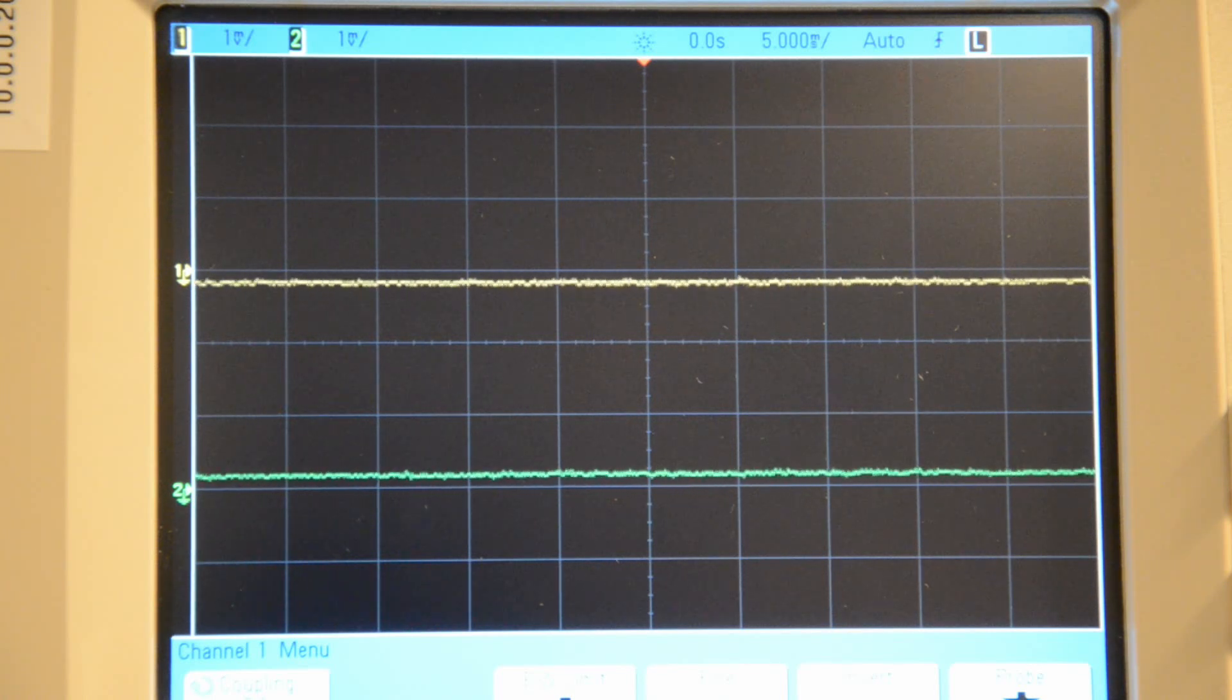We have a similar situation with channel 2, which monitors the output of the connected phone, and we're at the minimum line level now. And if I turn it up to the maximum, again, we can see no degradation.